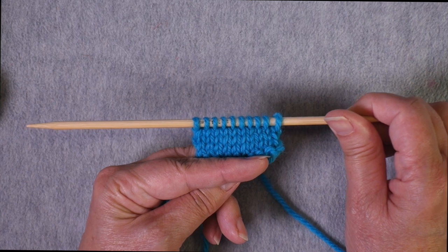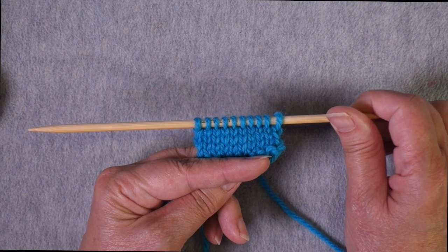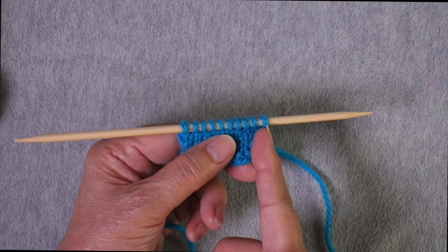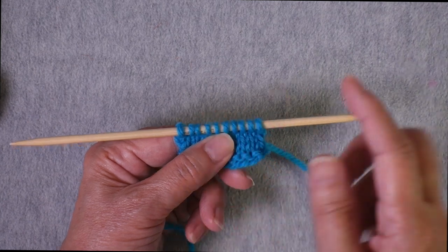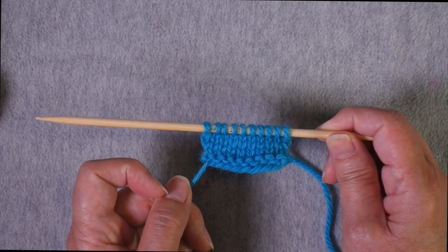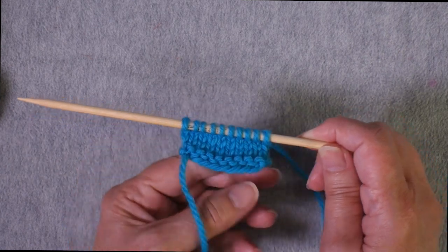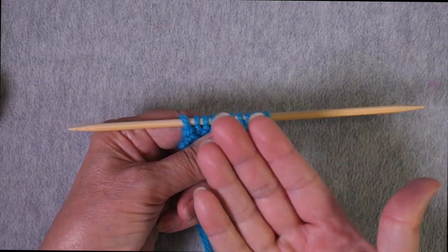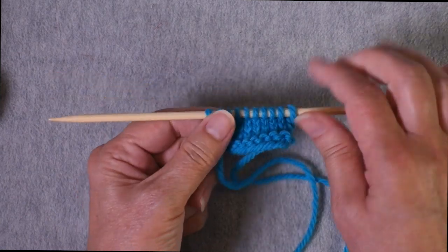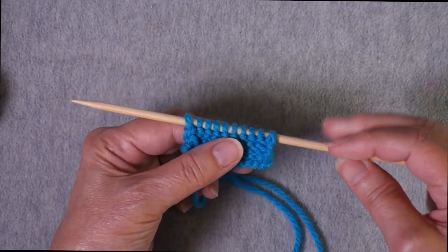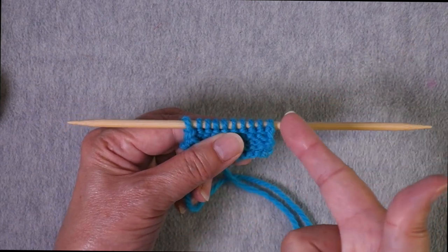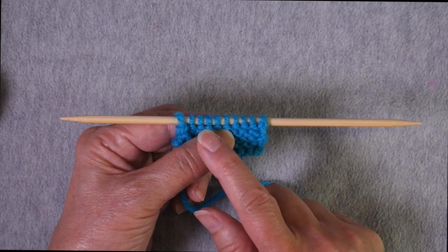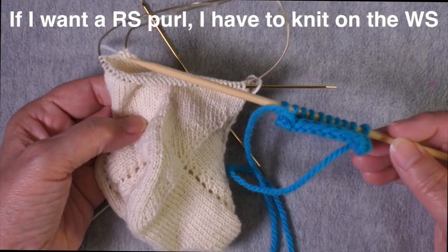When I work stockinette flat, I do different things when the right side is facing me than when the wrong side is facing me. On a right side row, I start at the right edge with stitch number one. In this case, I have 10 stitches, so I'd work all the way across to the left edge where I worked stitch number 10, and I would be knitting all of these stitches. Then when I turn the work to the back, the wrong side is facing me and I start at the left edge. This is where stitch number 10 is. I'm going to work in reverse order from stitch number 10 to stitch number one. And in order to get knit stitches on the front of the fabric, I have to work these as purls. So I'm doing different things in order to produce the same fabric.